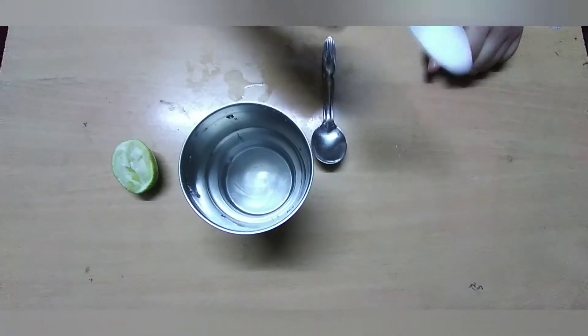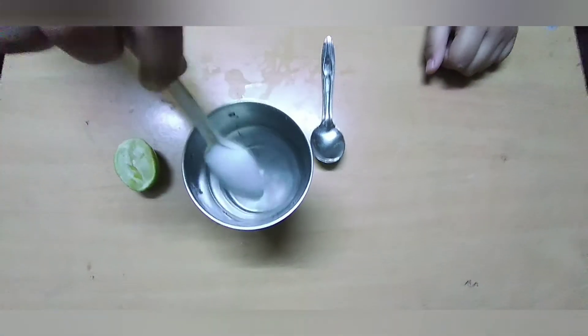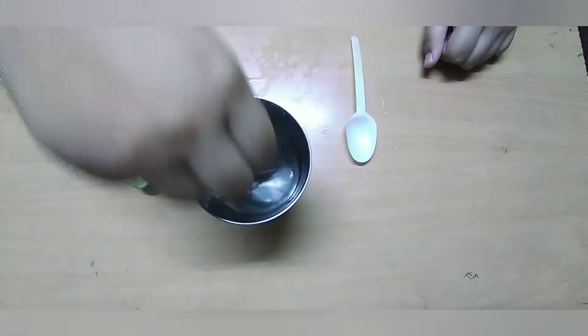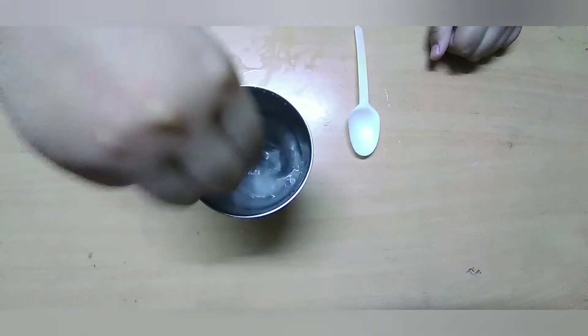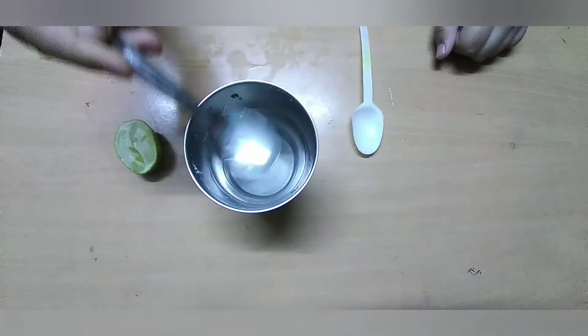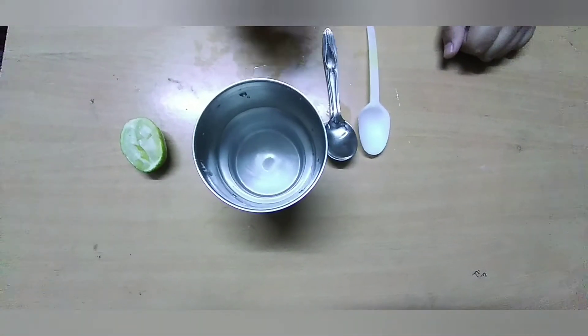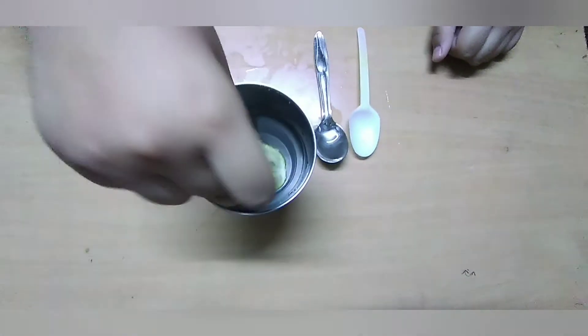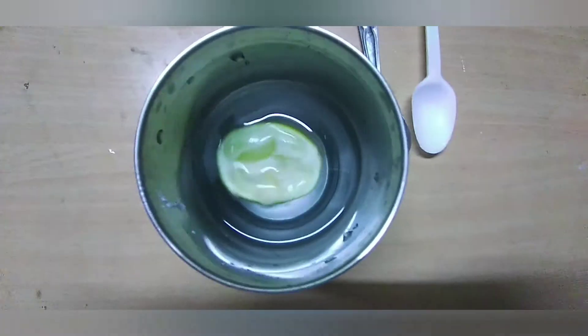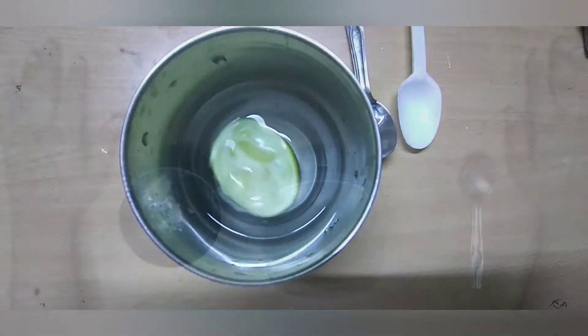We will first dissolve salt in water and stir it. When the salt is dissolved, we will put the lemon on the salty water. You can see a heavy lemon is floating on the water.